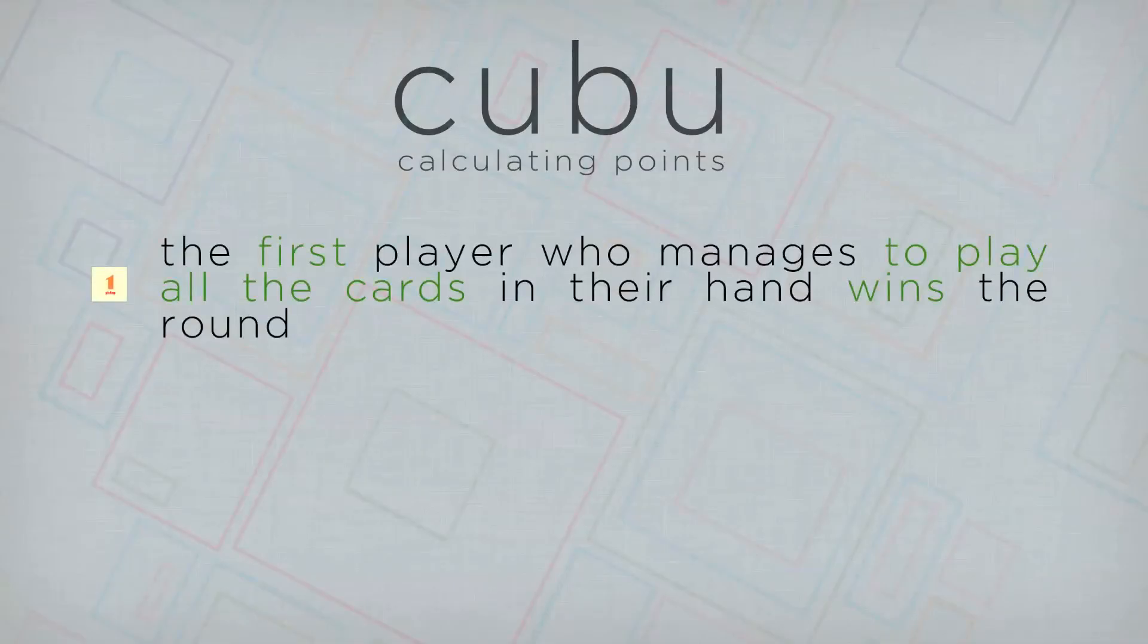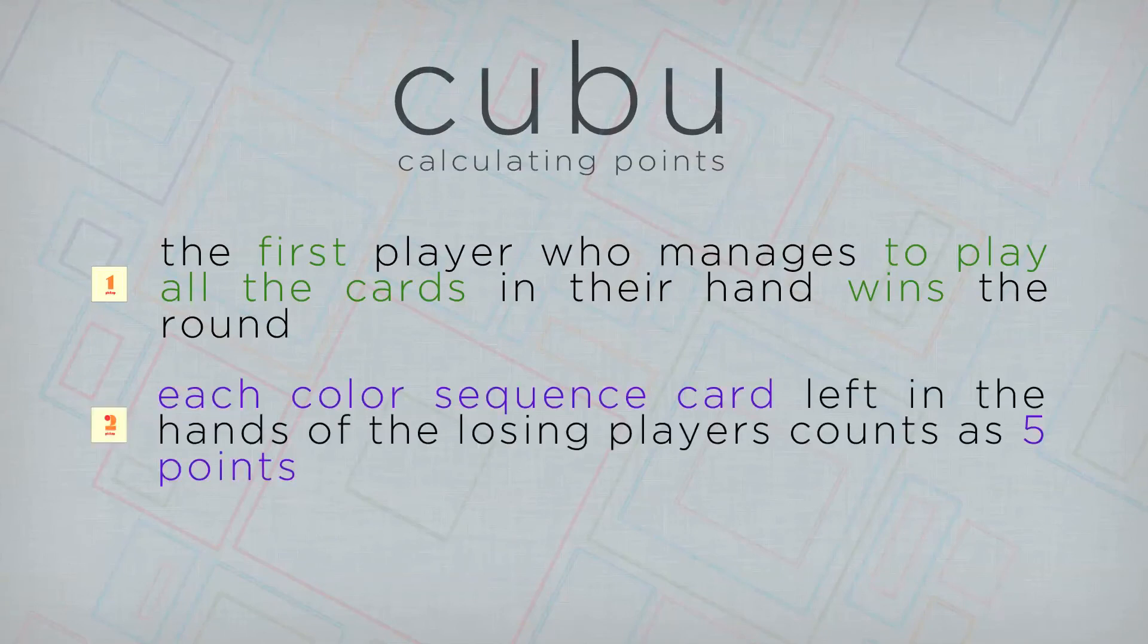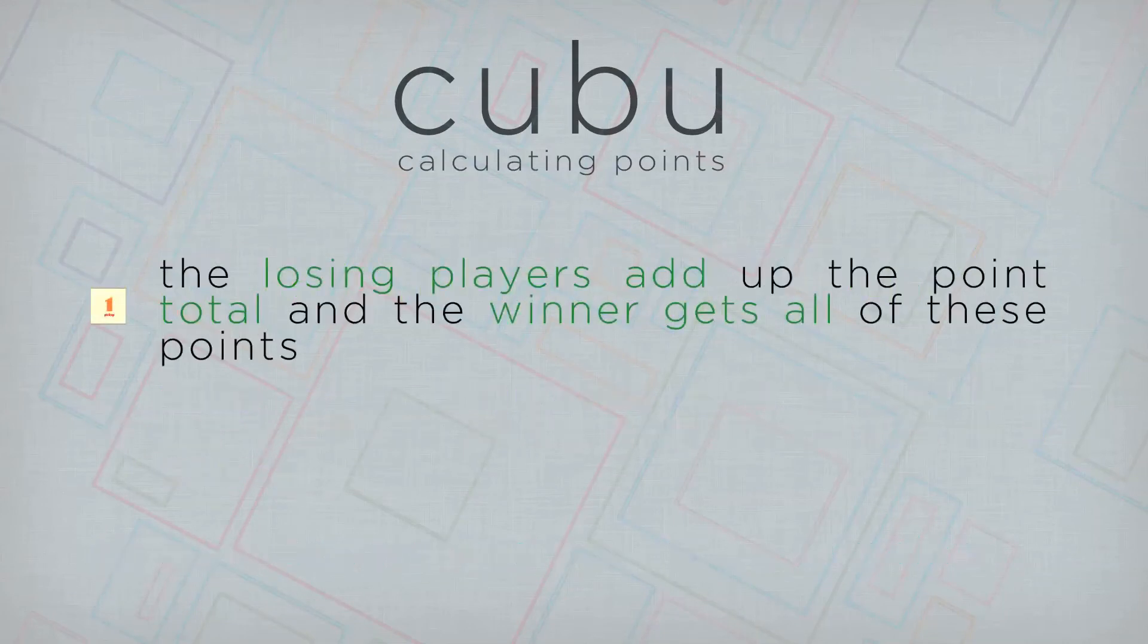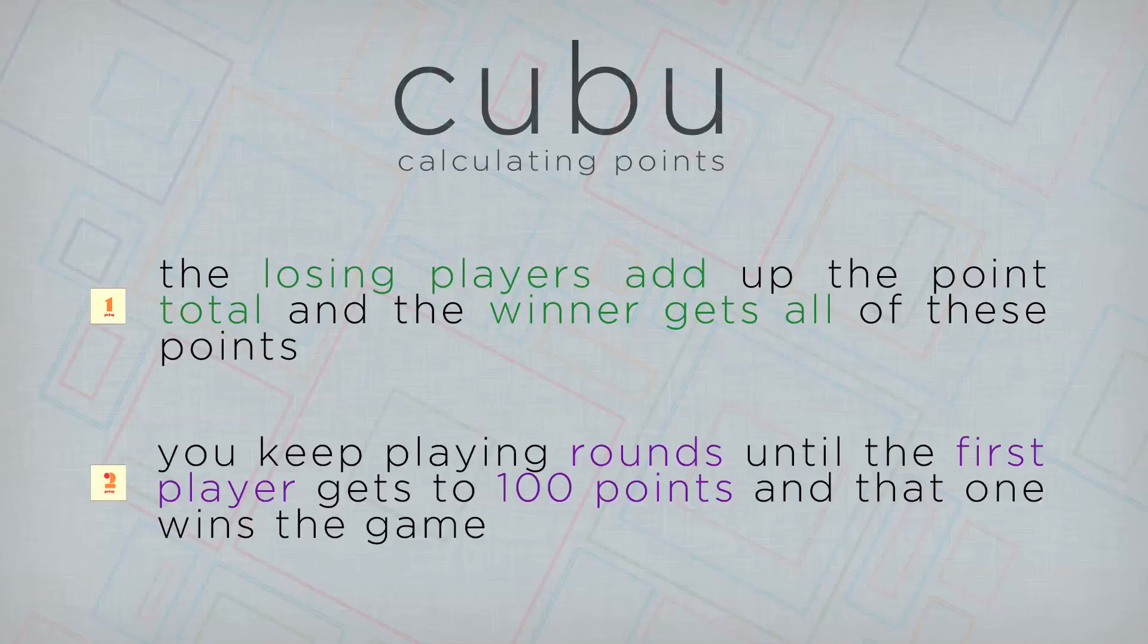Here's how you win the rounds in the game of Kubu. The first player who manages to play all the cards in their hand wins the round. Each color sequence card left in the hands of losing players counts as five points and action cards count as 10 points. The losing players add up the point total and the winner gets all of these points. You keep playing rounds until the first player gets to 100 points and that one wins the game.